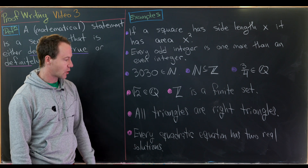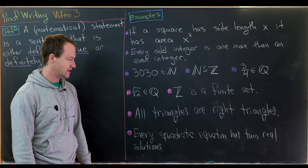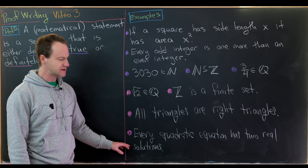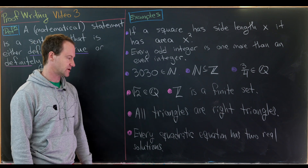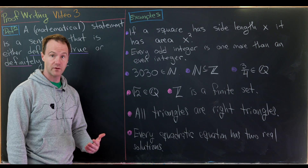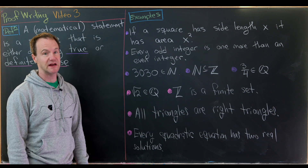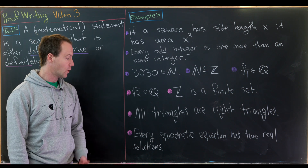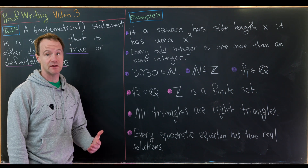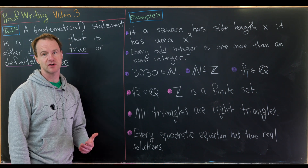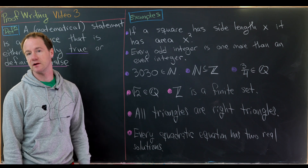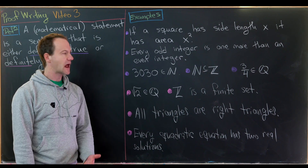Another false statement: every quadratic equation has two real solutions. This is false because you could have a quadratic equation with one real solution — a so-called repeated root — or zero real solutions, for instance x² = −1, which has no real solution.